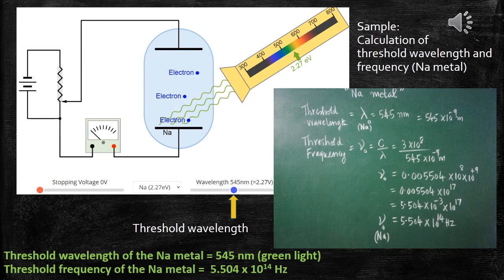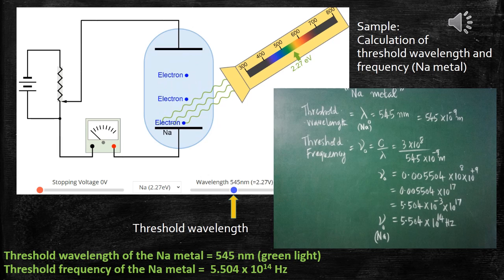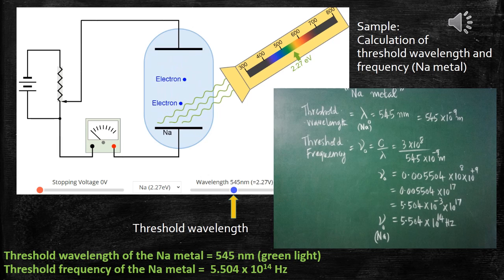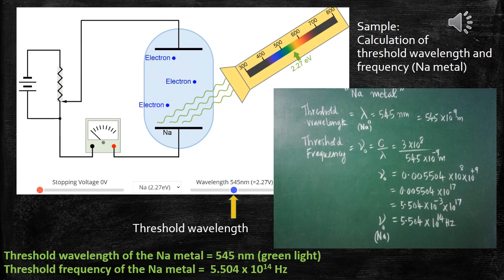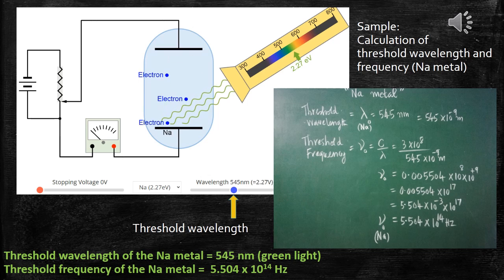Exactly at threshold frequency, the photoelectric current will be zero. If the frequency is greater than threshold frequency, slowly the photoelectric current starts increasing.